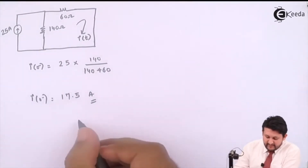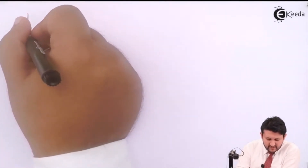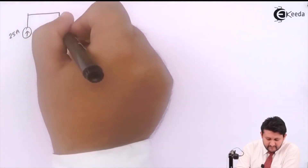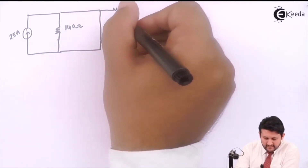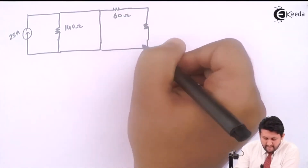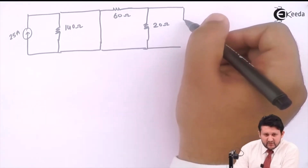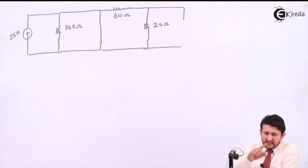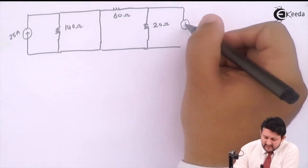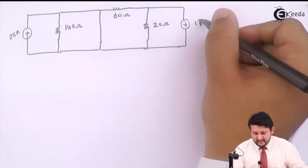Now for the second case: t = 0⁺ condition. When I say t = 0⁺, the switch will remain closed. With the switch closed, the circuit has 25 amps, resistance 140 ohms, switch closed, resistance 60 ohms, 20 ohms, and an inductor. In place of the inductor I draw a current source equal to the value found at t = 0⁻, which is 17.7 amps.